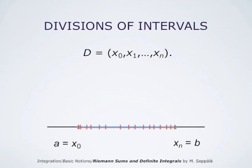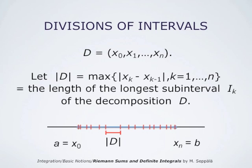If we have an ordered collection of points X0, X1, so forth, Xn, we measure the coarseness of this decomposition of the interval from A to B into subintervals by the length of the longest subinterval in this collection. So we say that |D| is the maximum of the length of the subintervals in this decomposition. In this picture, it is clear which interval is the longest, and the length of that interval is the measure |D|.